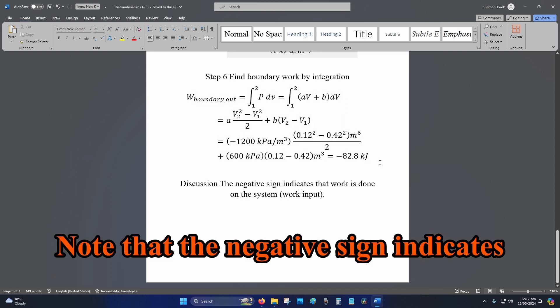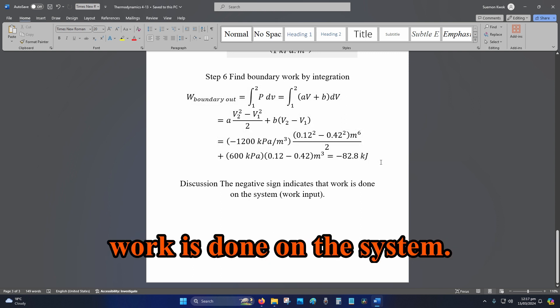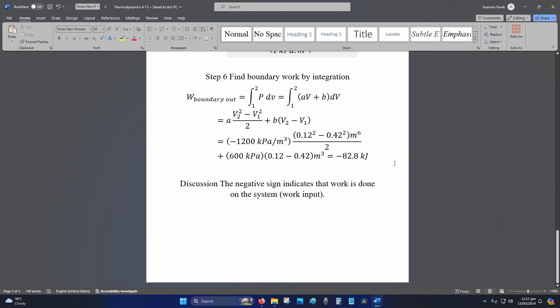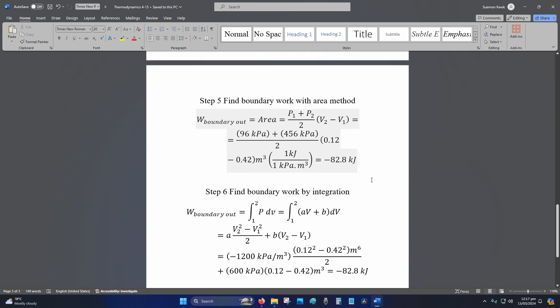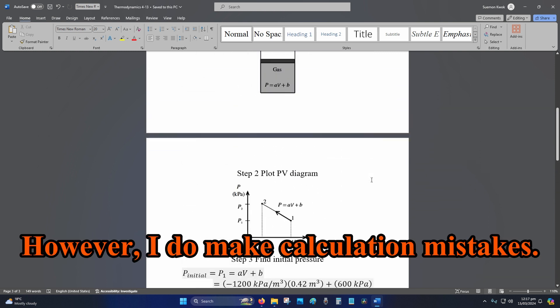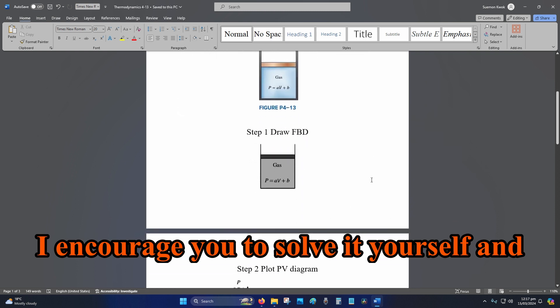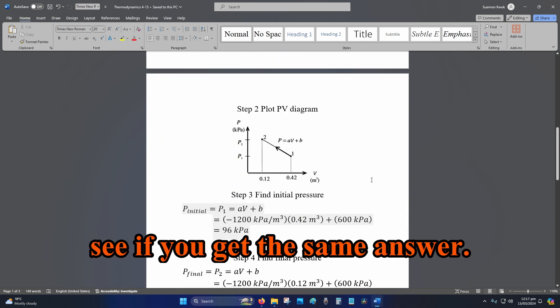Note that the negative sign indicates work is done on the system, so work is going in to the system. Disclaimers: the method is correct, however I do make calculation mistakes. I encourage you to solve it yourself and see if you get the same answer.